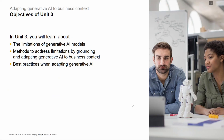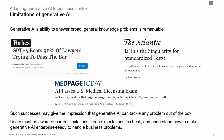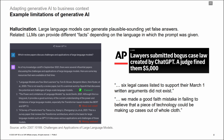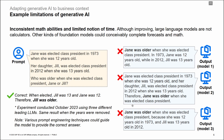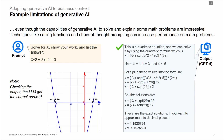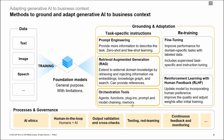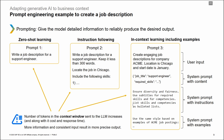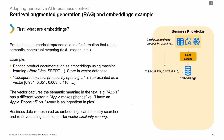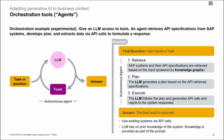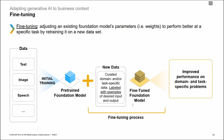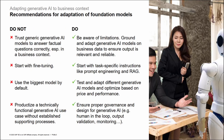Unit 3 — Adapting Generative AI to Business Context — focuses on addressing the limitations of generative AI models and adapting them to suit business contexts effectively. Participants will gain insights into the constraints and challenges associated with generative AI models, along with learning methods to mitigate these limitations through grounding techniques. The unit also covers best practices for adapting generative AI to business context, providing learners with practical strategies to enhance the effectiveness and relevance of AI applications within organizational settings.